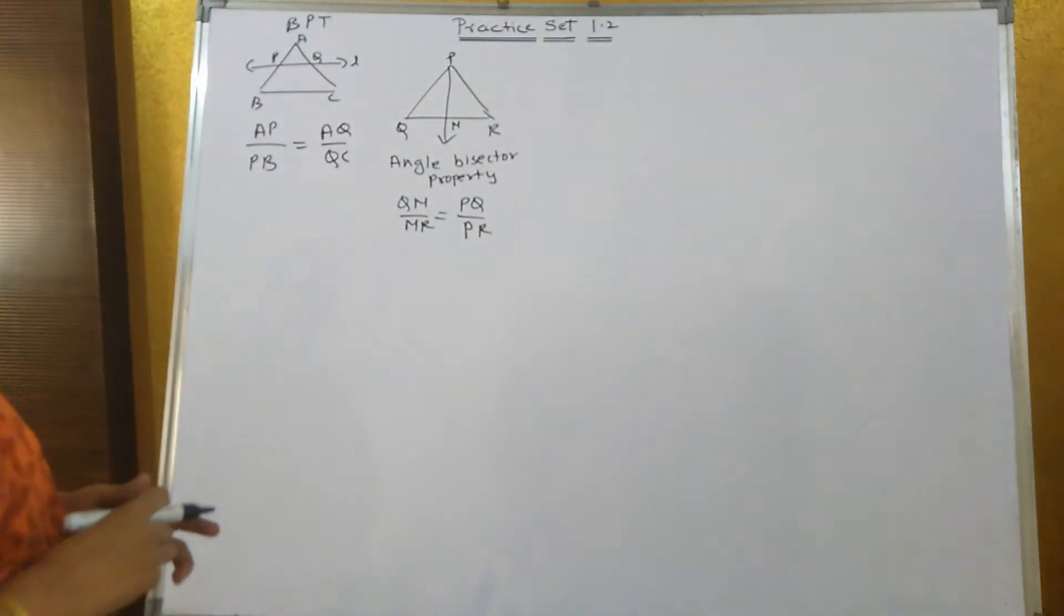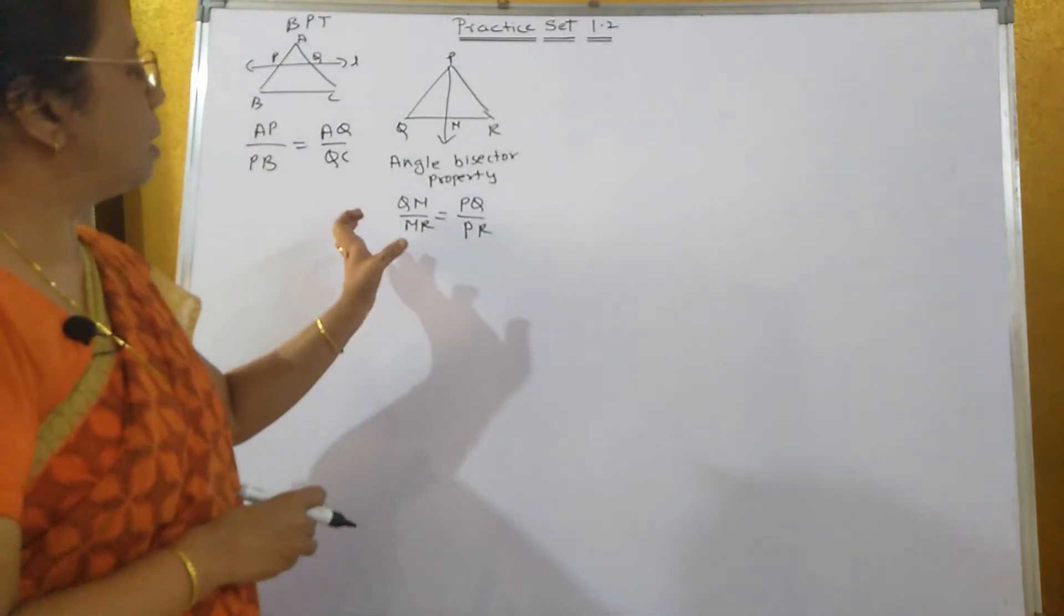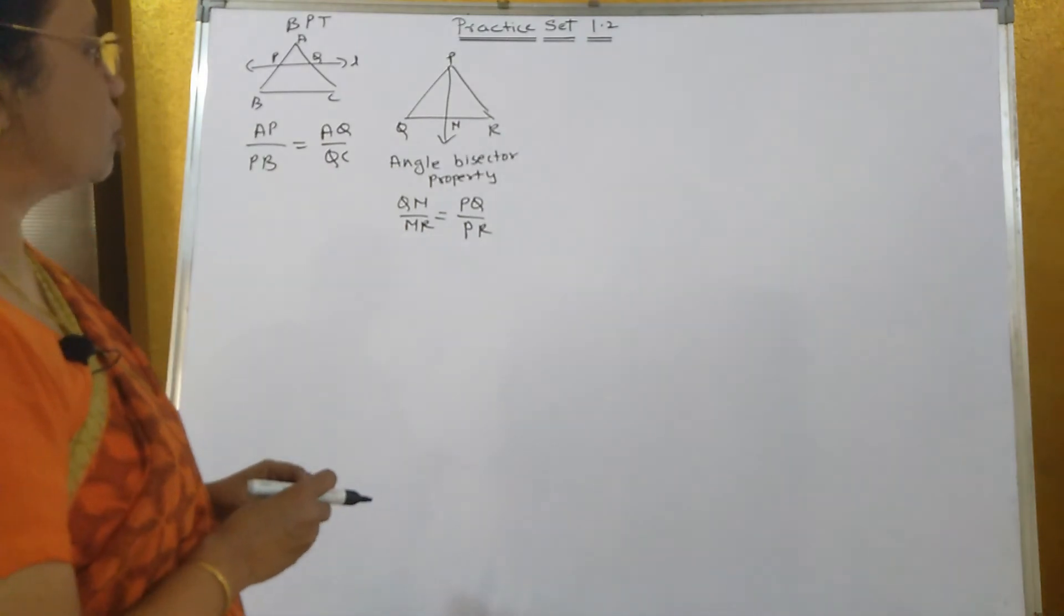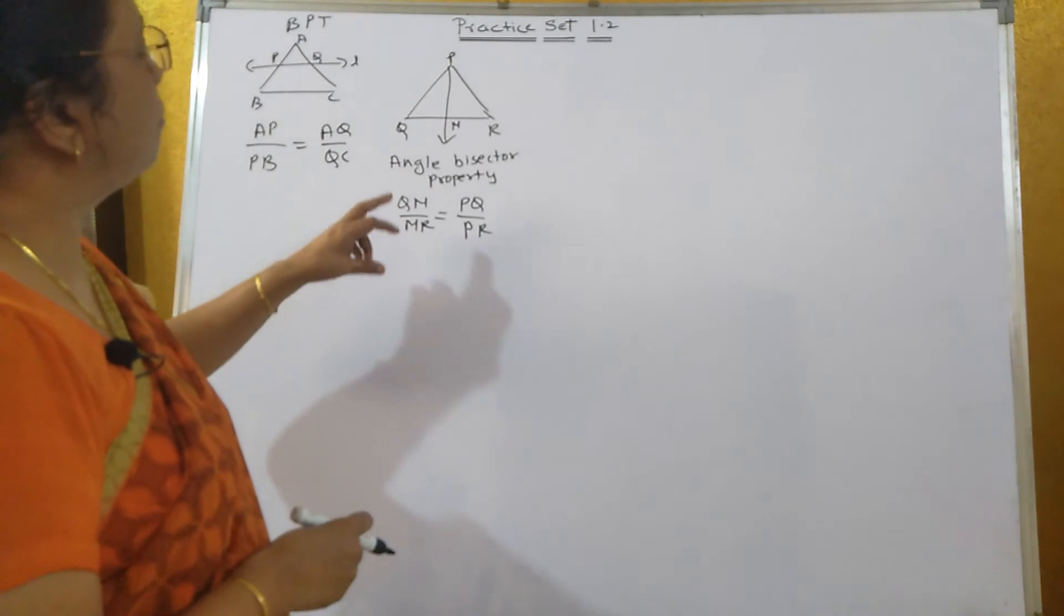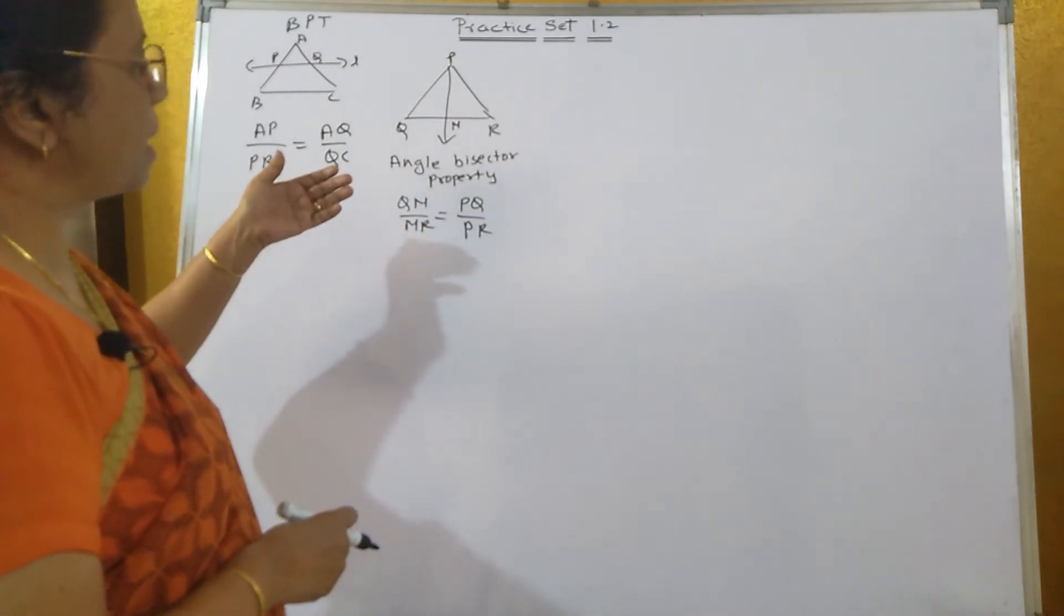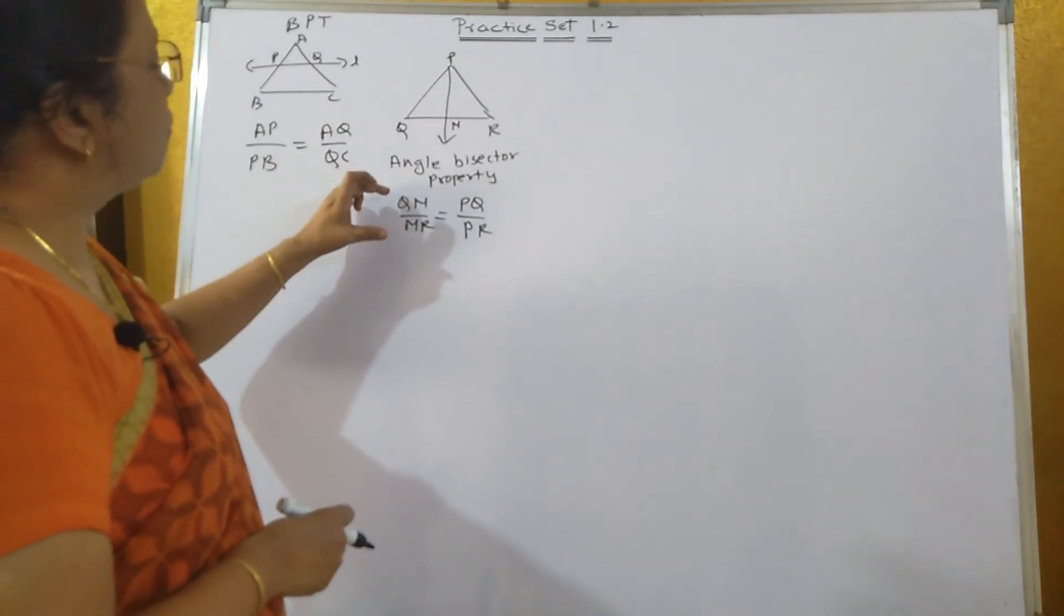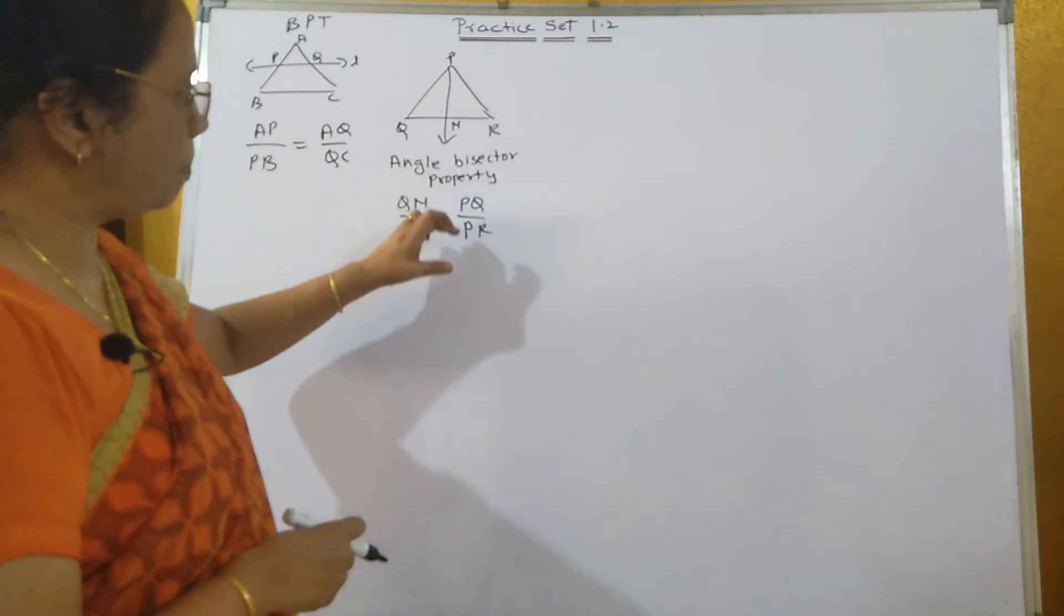So this is angle bisector property. The converse of angle bisector property is: if QM upon MR is equal to PQ upon PR, then PM has to be the angle bisector of angle P.